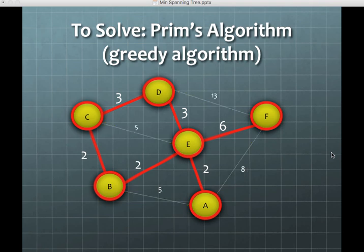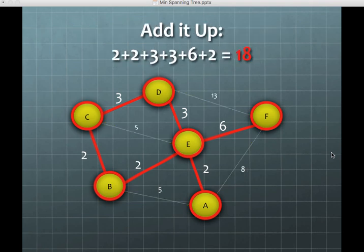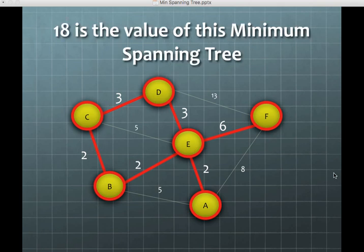Now we have our tree. If we add it up, our cost for this is 18, because we take 2 plus 2 plus 2 plus 3 plus 3 plus 6. So 18 is the value of this minimum spanning tree.